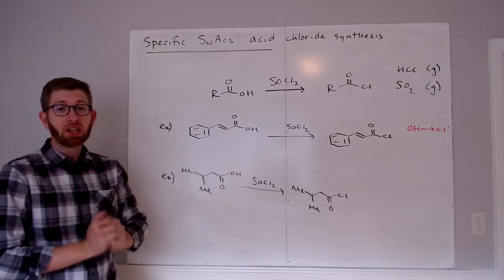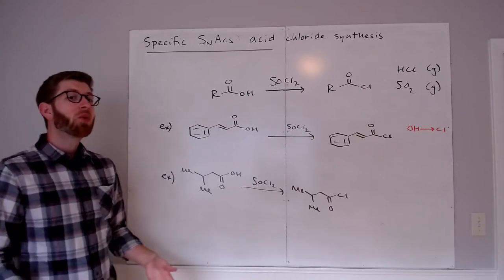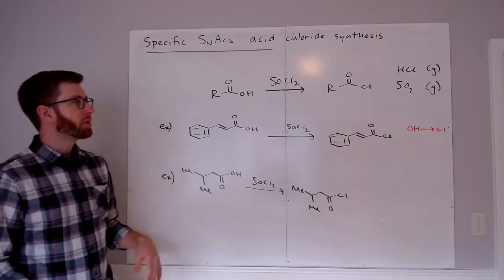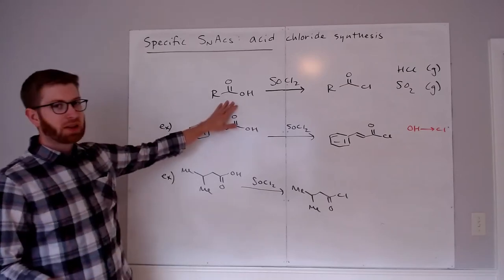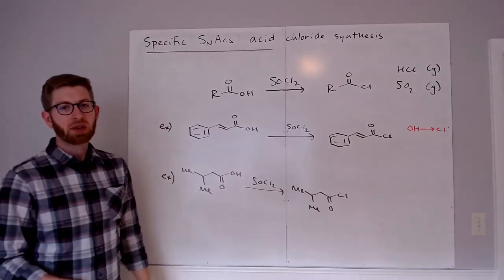If we wanted to get to the very top of that reactivity ladder so that we can make other kinds of carboxylic acid derivatives, maybe if we were initially interested in making an ester, for instance, one way we could do it is convert a carboxylic acid into an acid chloride and then using the acid chloride to do some kind of a SNAC reaction.